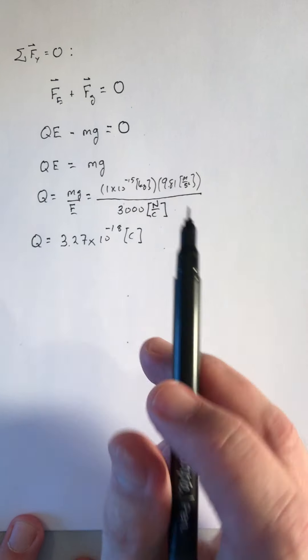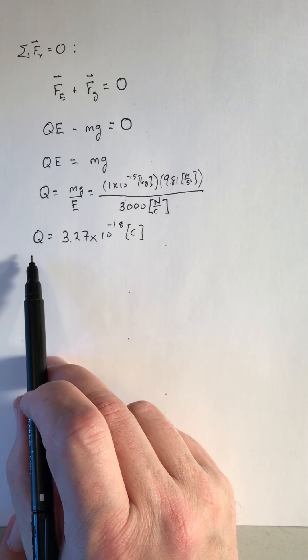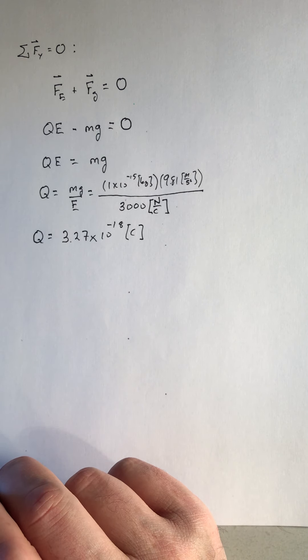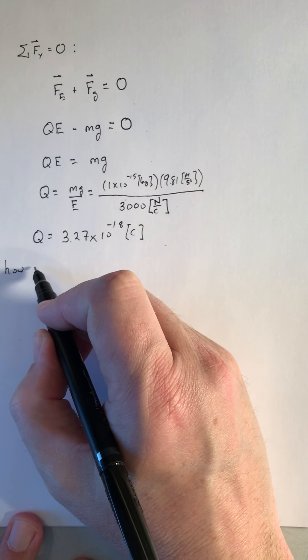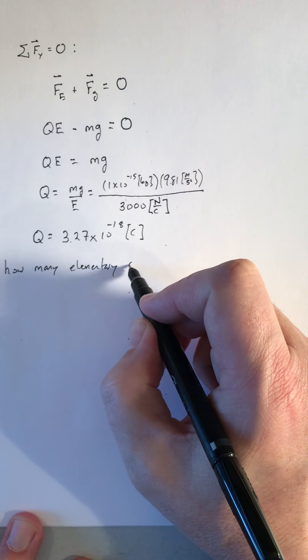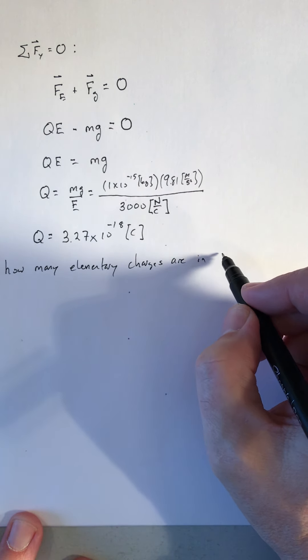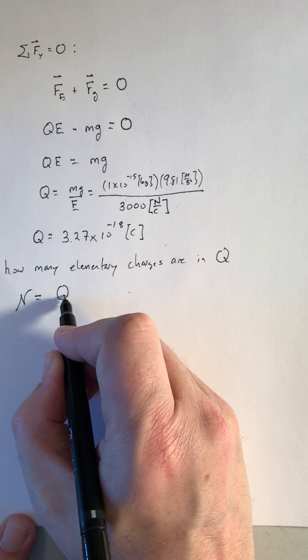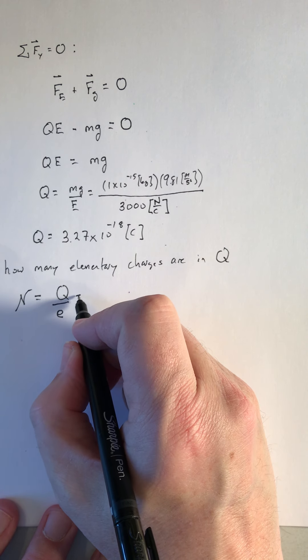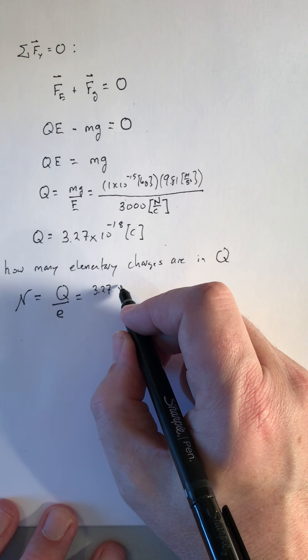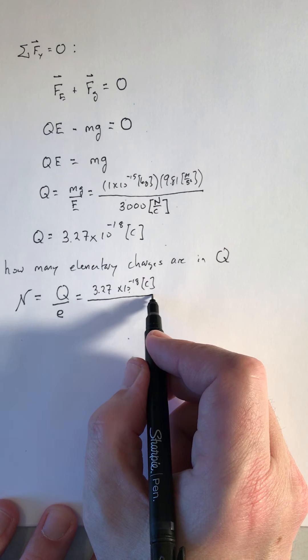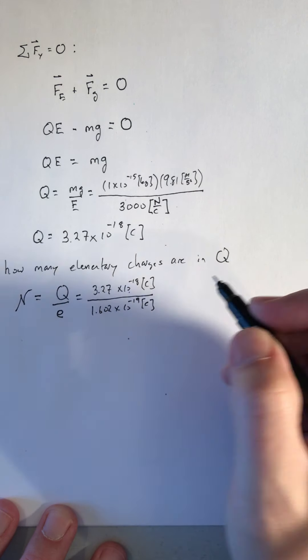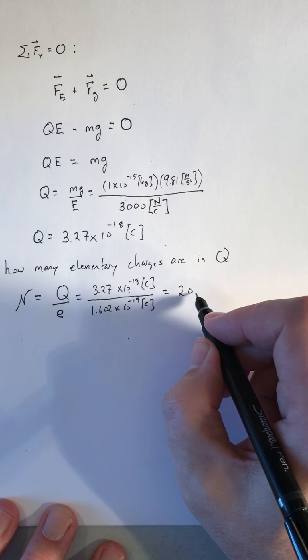We actually need a more precise measurement of the mass to support having all three of those digits, but it's just for the sake of argument right now. And we want to think, is that charge a reasonable value? Would that show up in an experiment? So it's also like asking, how many elementary charges are in that charge q? So that number of charges will be our charge on the oil drop, the elementary charge. 3.27 times 10 to the minus 18 coulombs over 1.602 times 10 to the minus 19 coulombs for the elementary charge.